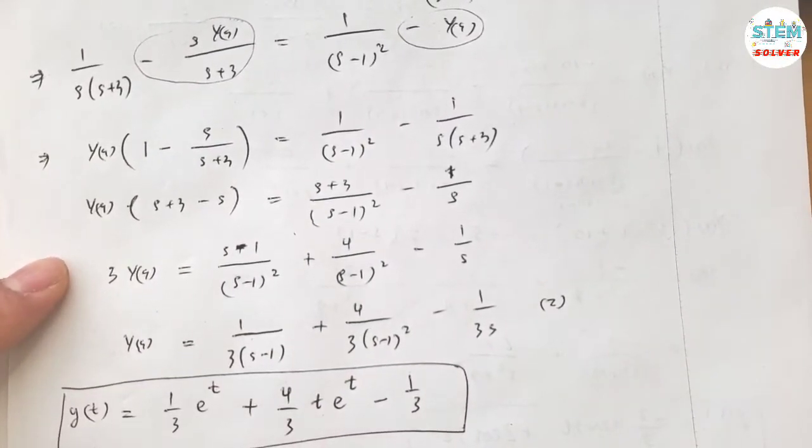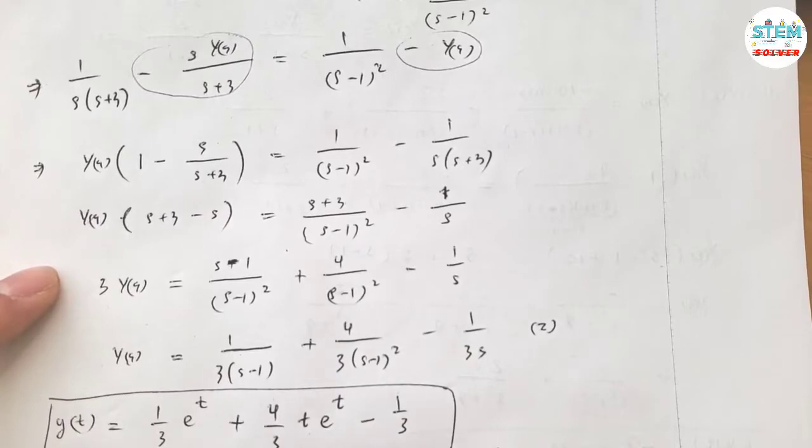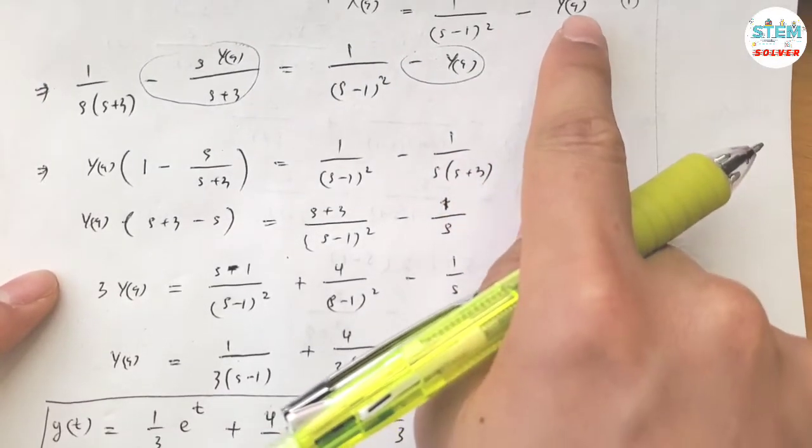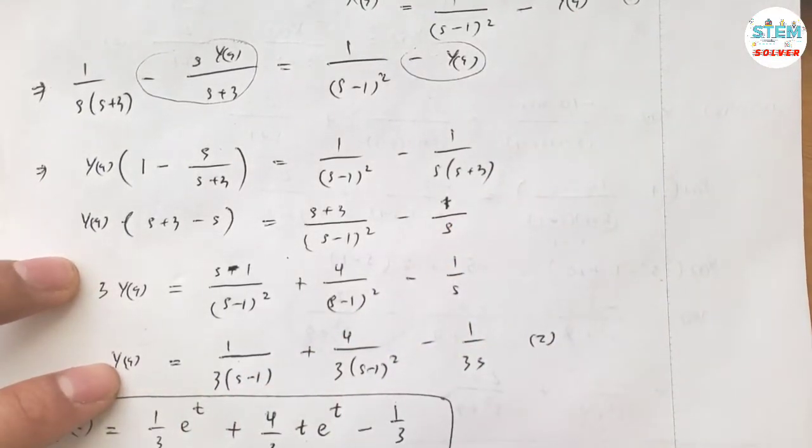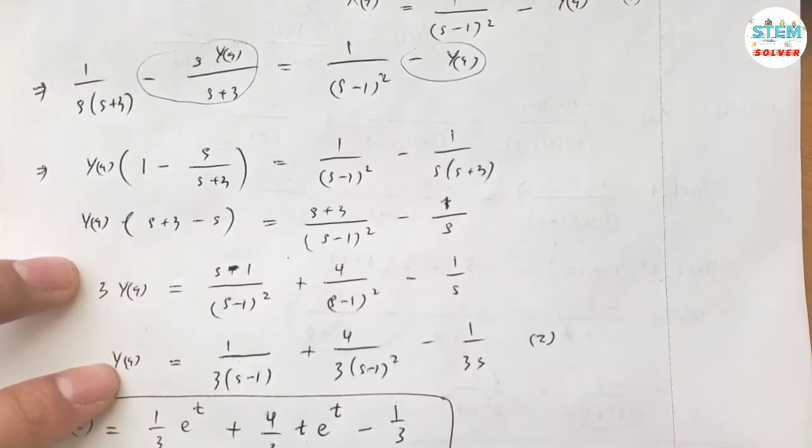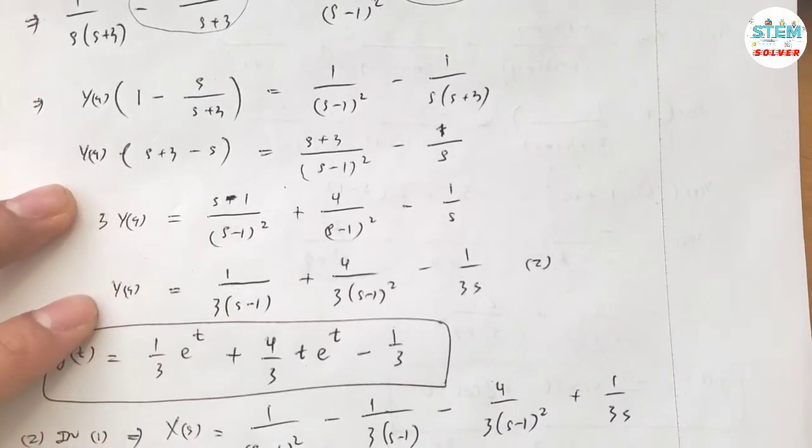I have capital X(S) equal 1 over S minus 1 squared minus Y(S). Capital Y(S) is this, so I have 1 third S minus 1 minus 4 third S minus 1 squared plus 1 third S.